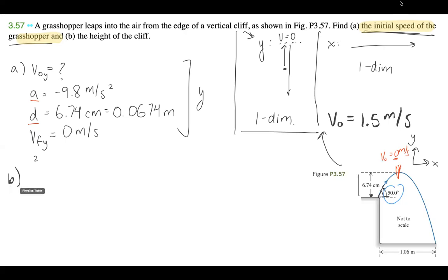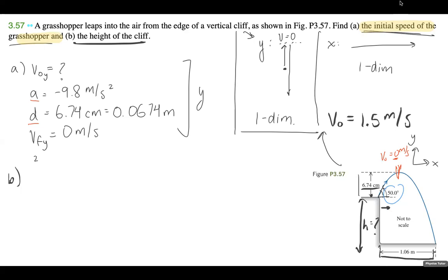For Part B, we are trying to solve for the height of the cliff. We know that 6.74 centimeters is how high the grasshopper jumped, but what is this distance H — the height of the cliff? What we can do is use our V-naught value and get the X component from it. We're already given the horizontal distance it travels, so we can find the time from that. Then using the time, we can plug that back into the Y component and solve for the height. It might sound a little abstract, but let's get started.